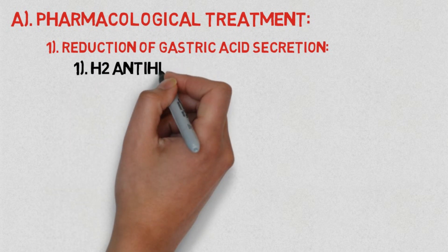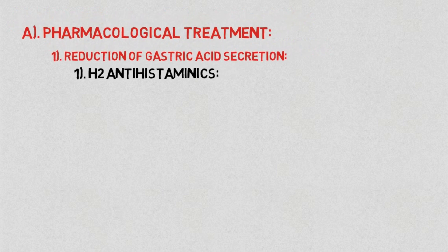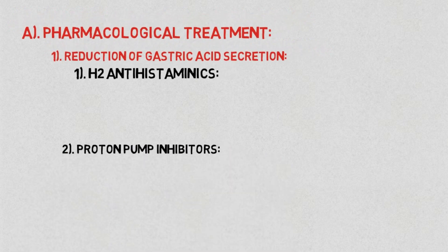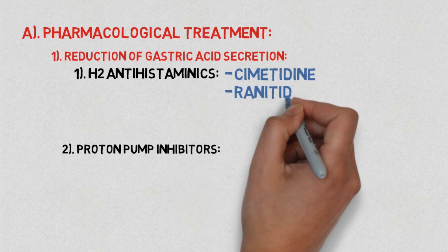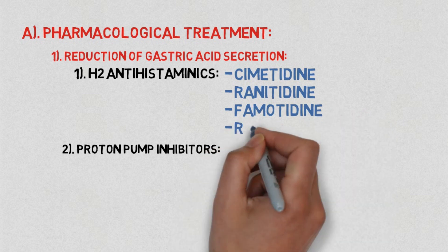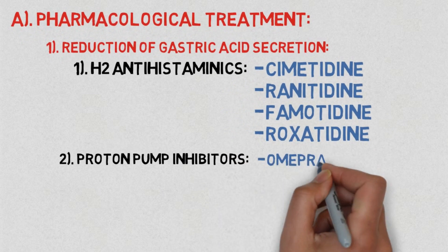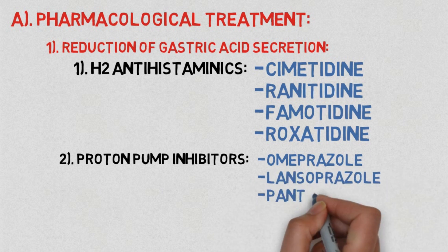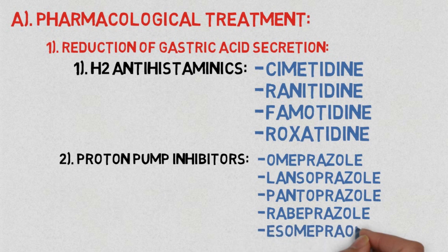In this topic the drugs are classified mainly into four types, but in this slide we will talk about H2 antihistaminics and proton pump inhibitors. The drugs which fall under H2 antihistaminics are cimetidine, ranitidine, famotidine, and roxatidine. Whereas in proton pump inhibitors the drugs are omeprazole, lansoprazole, pantoprazole, rabeprazole, and esomeprazole.